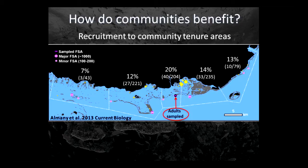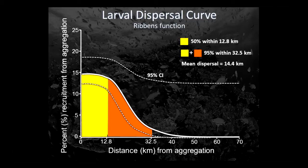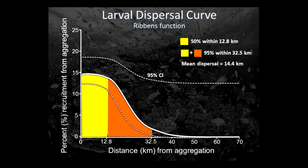We published that earlier this year in Current Biology. We were also able to produce a larval dispersal kernel from these data, showing that basically 95% of the larvae produced from that aggregation are settling within about 33 kilometers of the aggregation site. The confidence intervals are quite big because we need more samples at further distances to really nail down what's going on.